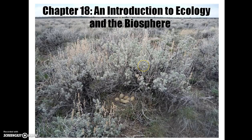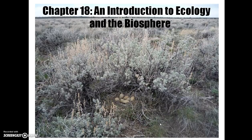The sage grouse is very dependent on this sort of habitat. It eats sagebrush leaves in the winter, it nests under sagebrush, and they will use clearer areas with shorter grasses as breeding grounds or leks. Sage grouse can live their entire lives in a relatively small area of this habitat.